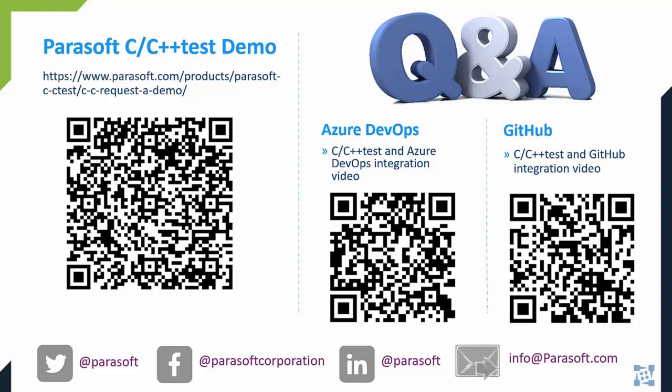You can see the QR code on the left-hand side, or send us an email at info@parasoft.com. You can also find us and follow us on Twitter, Facebook, and LinkedIn.